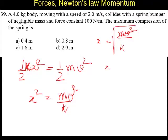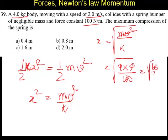What is m? m is given as 4 kg. v is given as 2, so another 4. k is given as 100. So 4 into 4 by 100, 16 by 100.